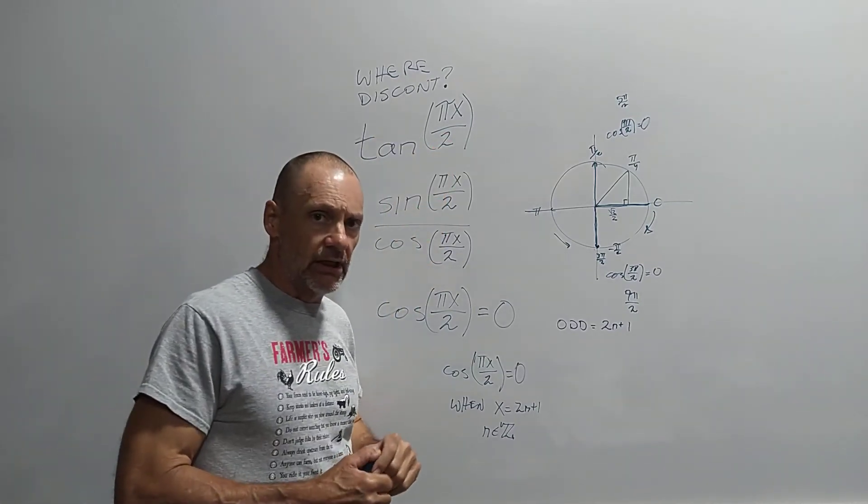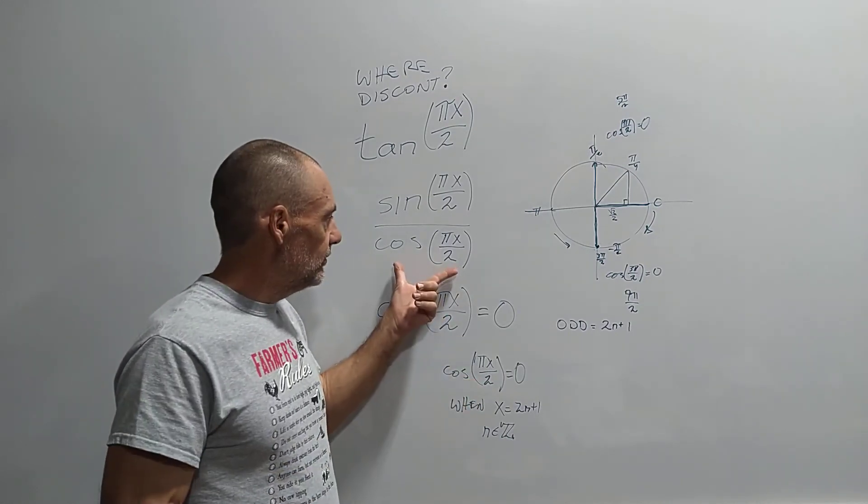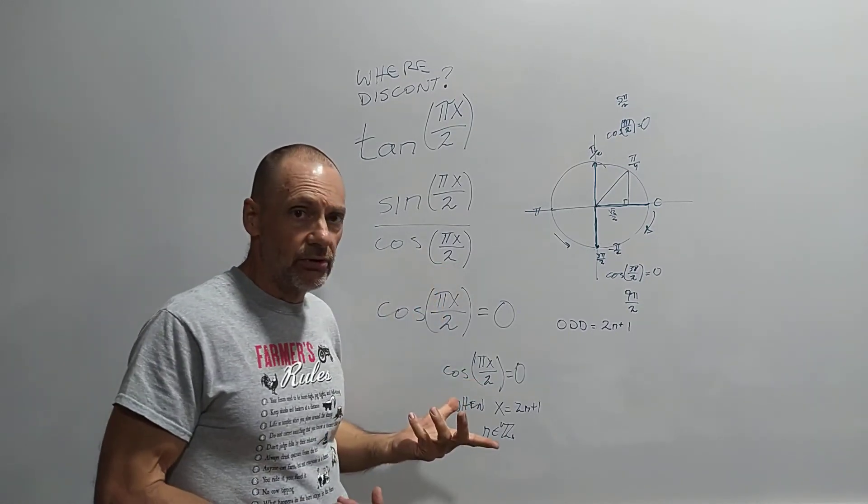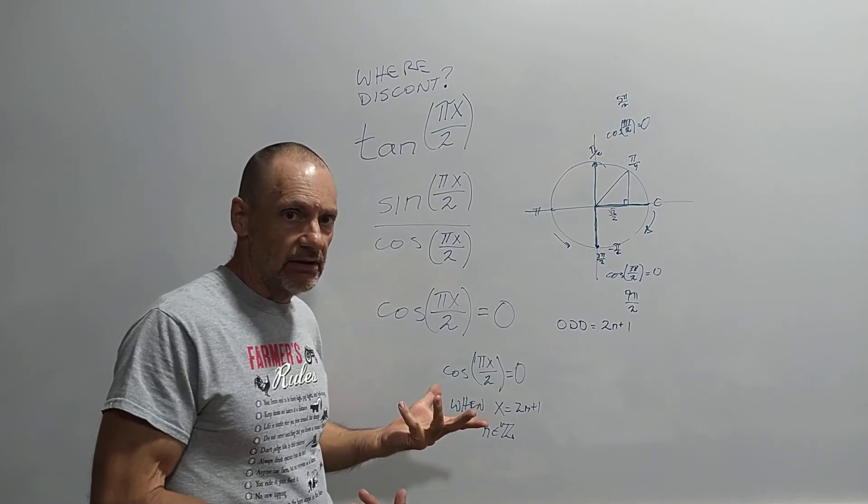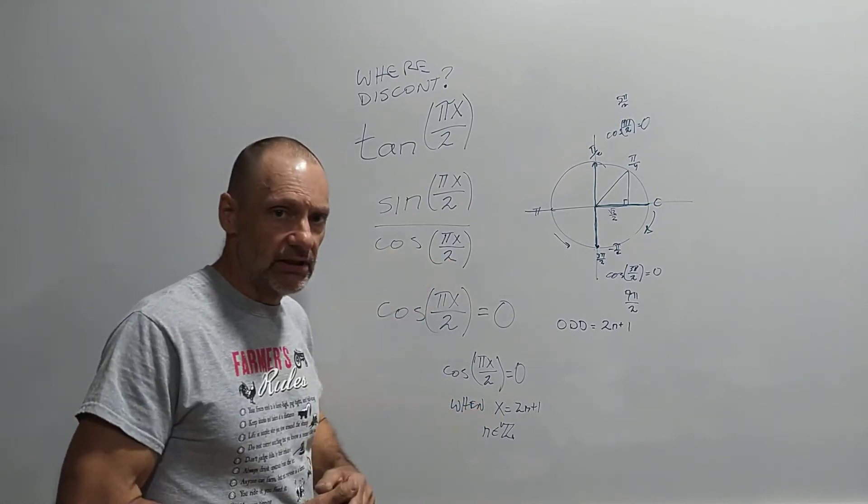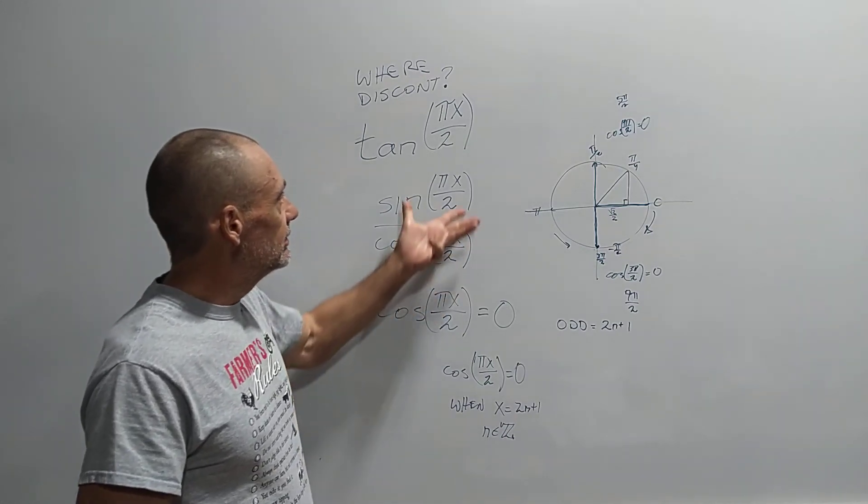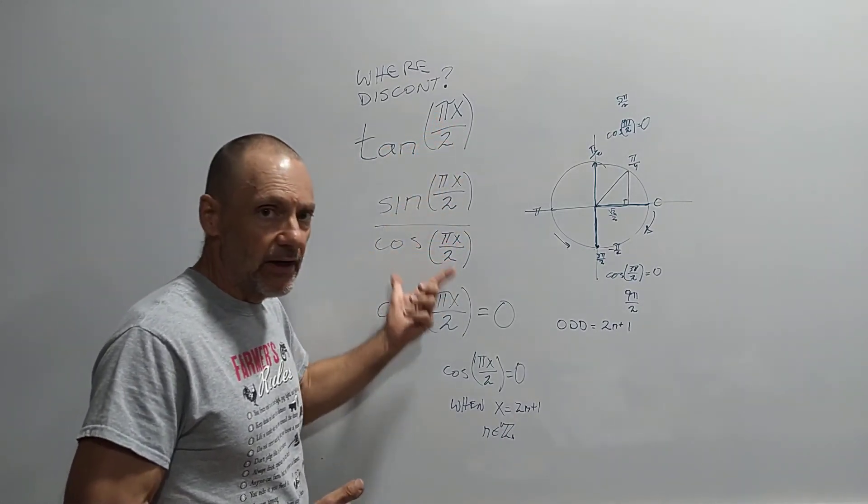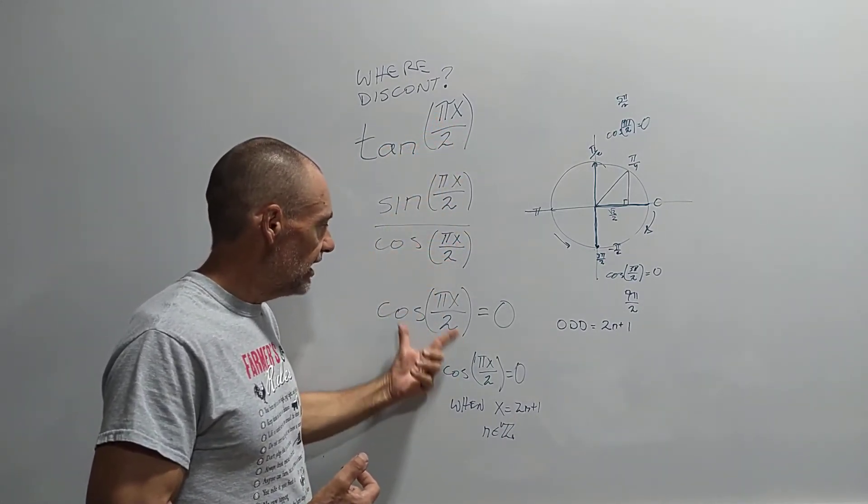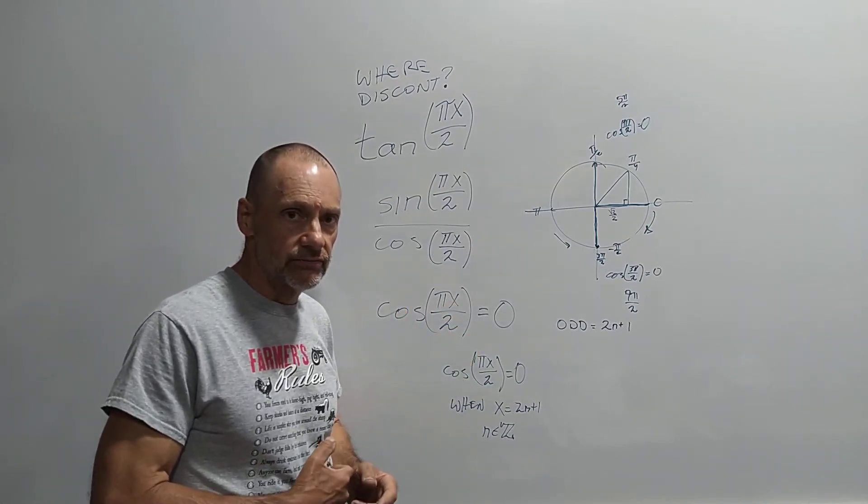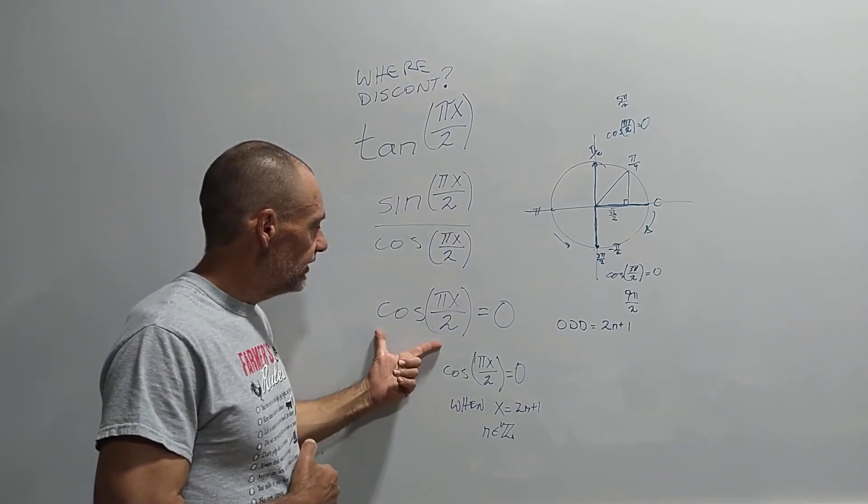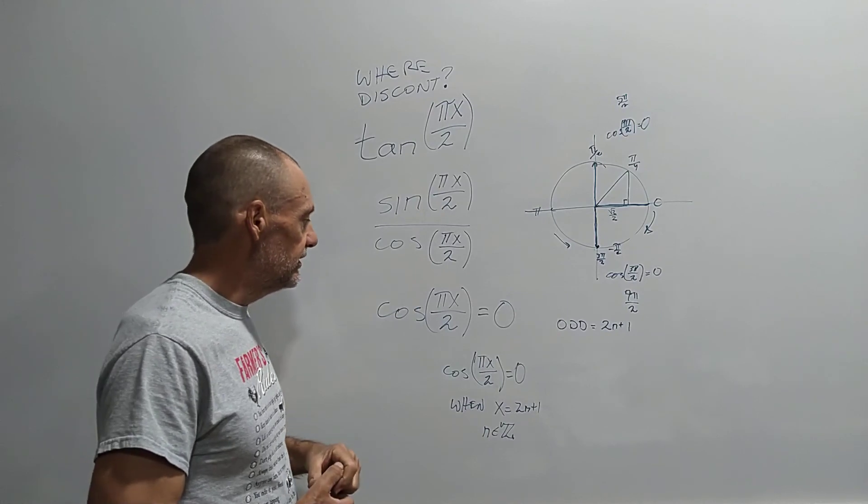Well, with a fraction, anything that's expressed in this way, when the bottom of the fraction is 0, this thing is not going to be defined, so it's definitely not going to be continuous if the bottom is 0. So we can sort of simplify this problem into the question, where is cosine pi x over 2 equal to 0? So if we can answer this, we get the answer to this one right here.